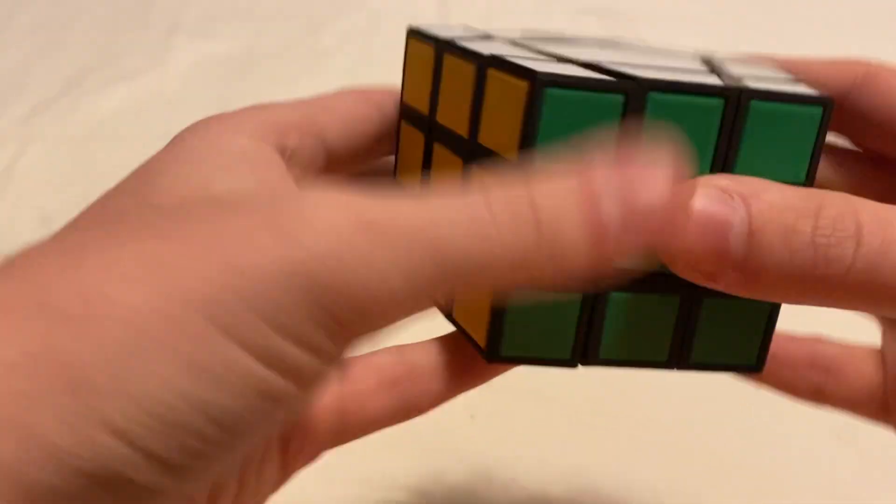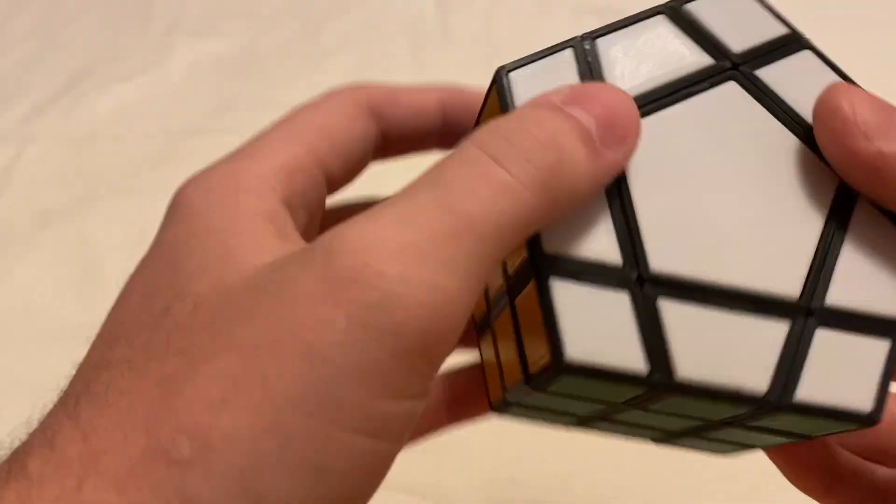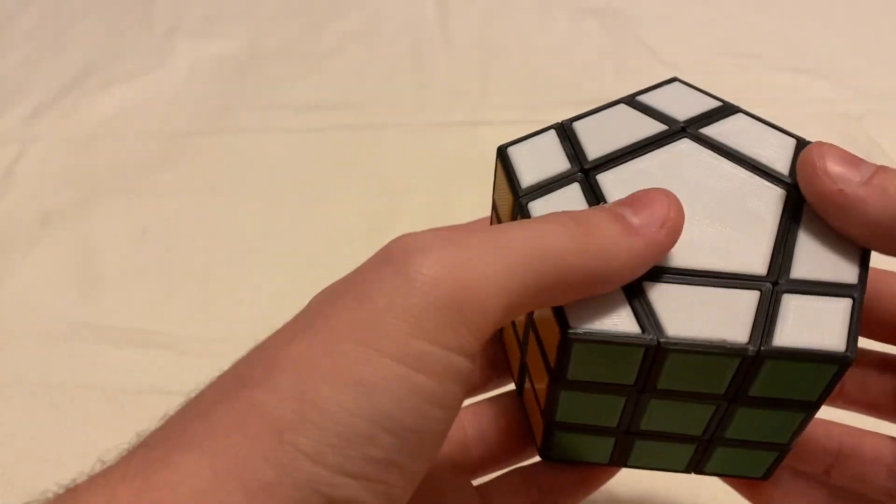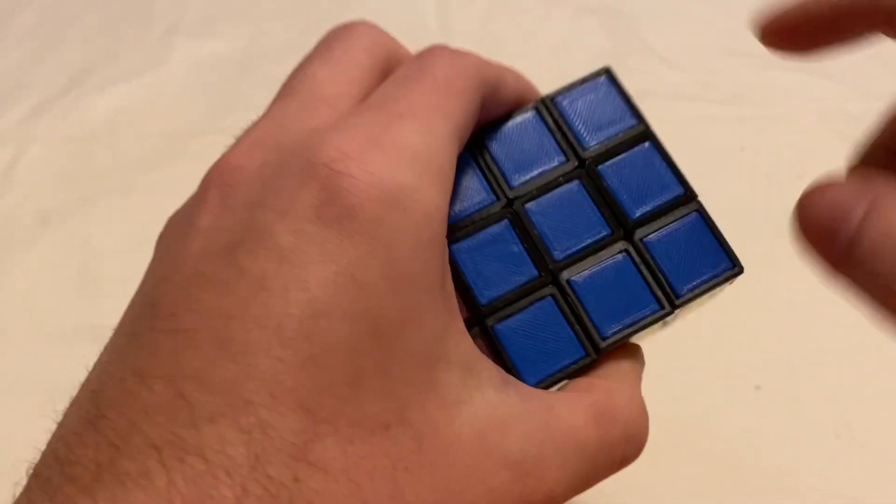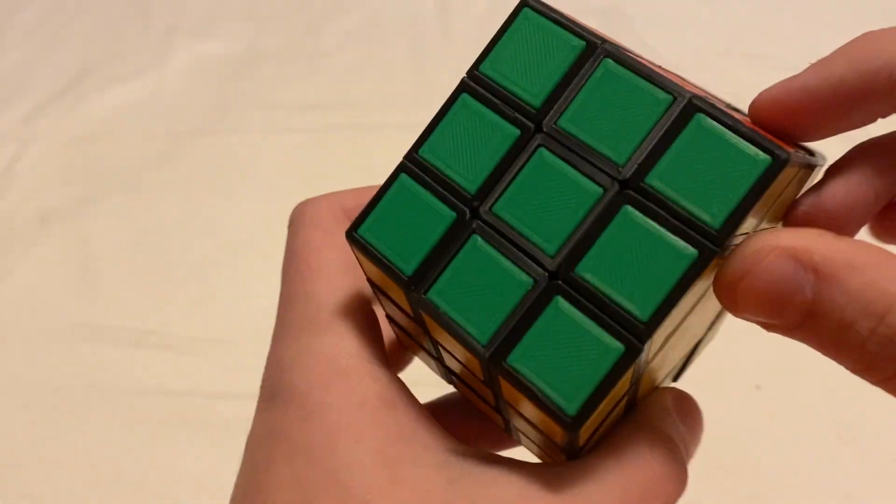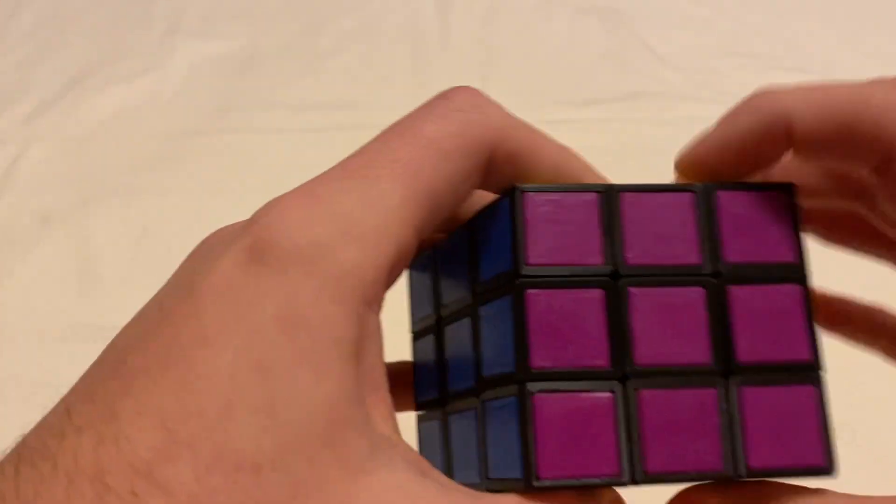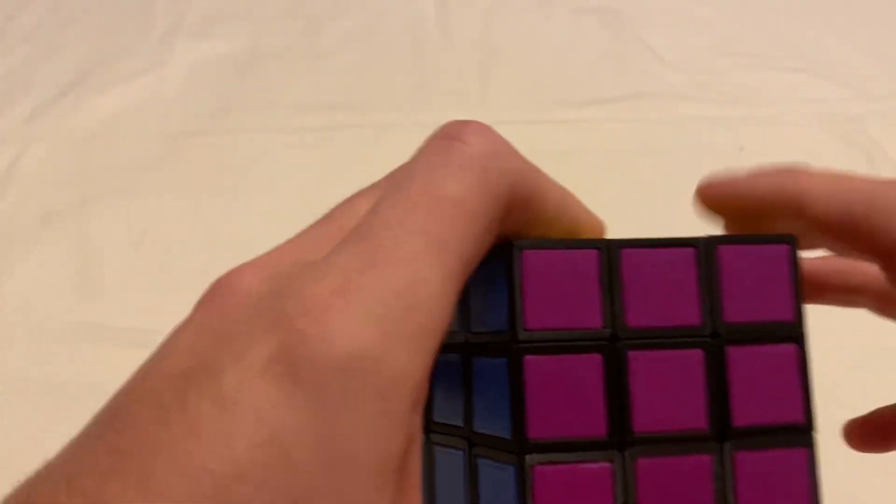So, this puzzle actually has seven faces, while a 3x3 has six. And it has the six colors that a normal cube has, plus a seventh color, which I made purple.